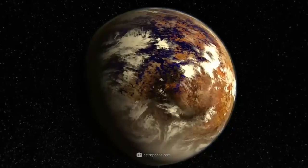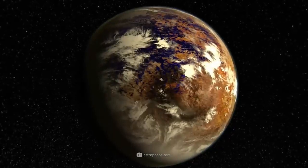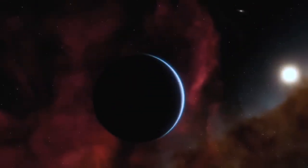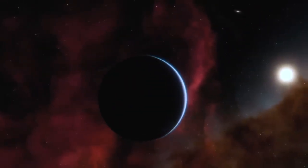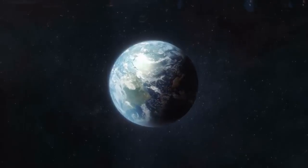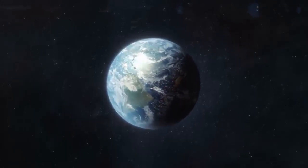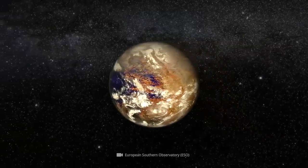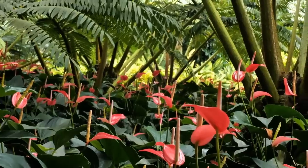On the so-called Earth Similarity Index, Proxima Centauri B reaches a value of 0.87. As this official designation already reveals, the ESI indicates how similar another celestial body is to our Earth. But does this mean that life is possible on Proxima Centauri B or that it has already developed there?